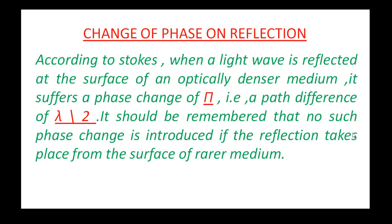First, Change of Phase on Reflection. That means, which light is reflected? Reflected light has a phase which will change. Phase means angle. According to Stokes — Stokes is a scientist — when a light wave is reflected at the surface of an optically denser medium, it suffers a phase change of pi, that is, a path difference of lambda by 2.